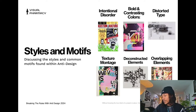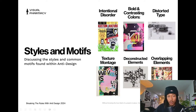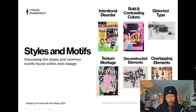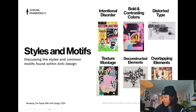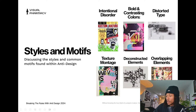Here are some different styles and motifs of anti-design: intentional disorder, bold and contrasting colors, distorted type, texture montage — I believe this is a piece from David Carson — deconstructed elements from Wolfgang Weingart, who is known as the father of new wave, and overlapping elements. This piece is from Art Chantry — a screen print on paper.